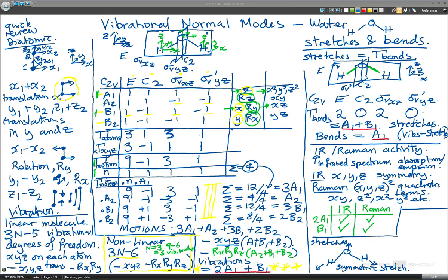So both bonds lengthen at the same time as opposed to what we have just next to it. And now the hydrogens are moving sort of in opposite directions and the oxygen is moving over there so one bond is getting longer and the other bond is getting shorter and this one is the antisymmetric stretch. And this has got symmetry A1 and this has got symmetry B1.